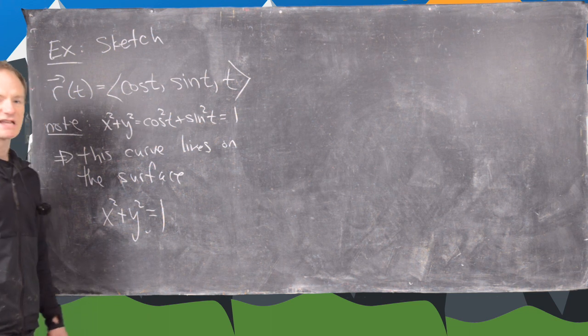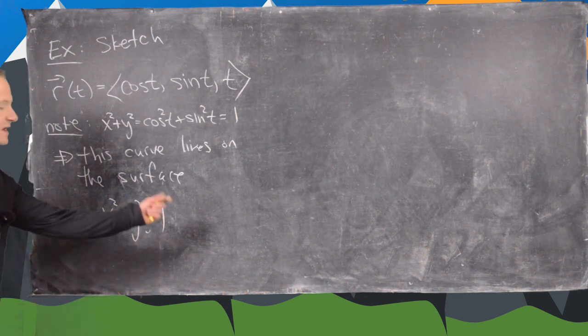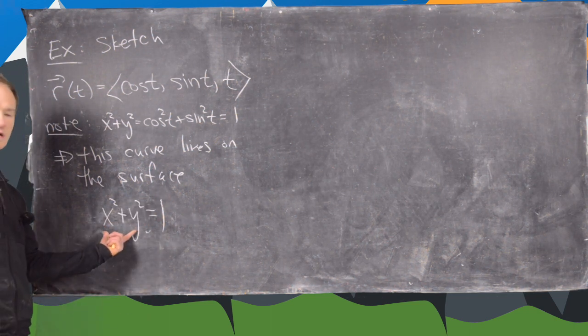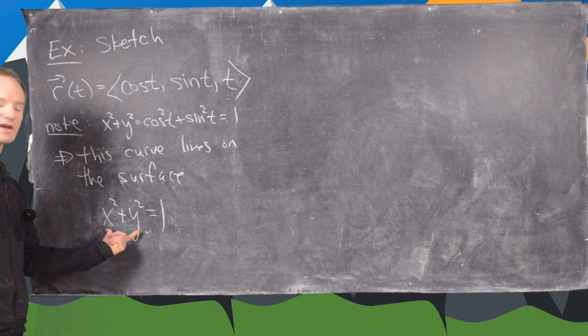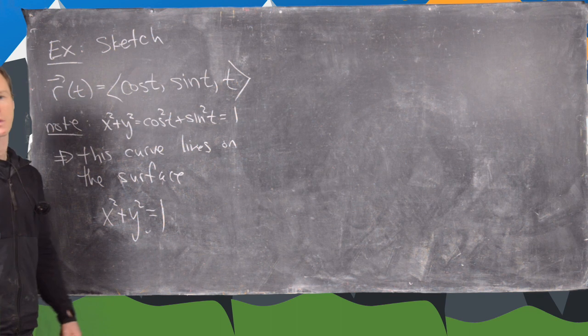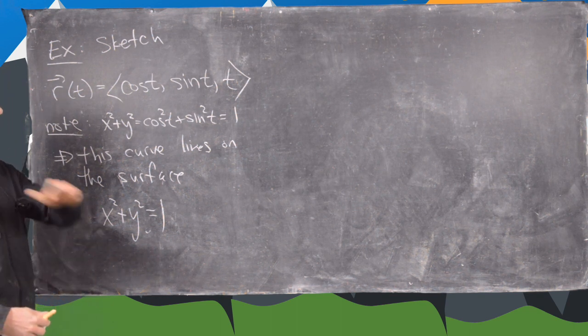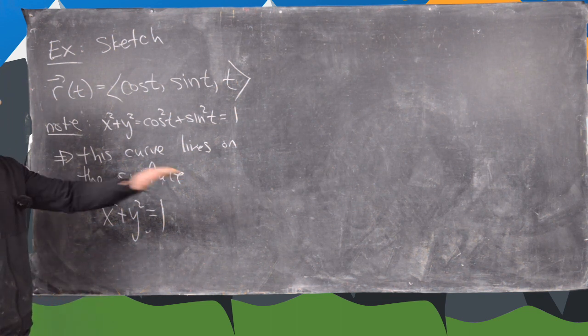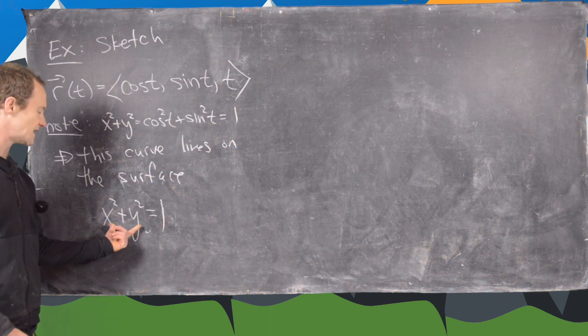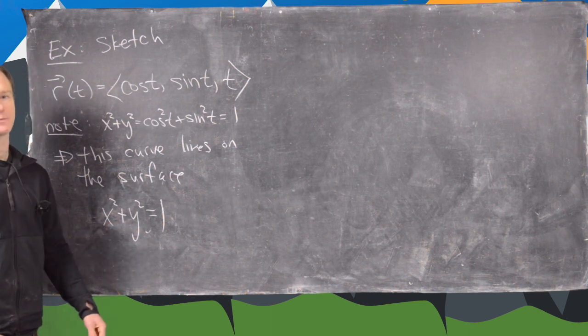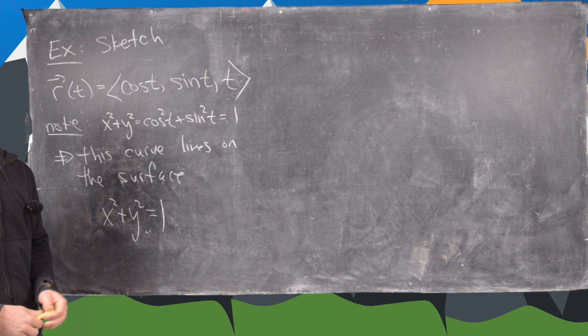So now let's think about what this surface is. So notice there's no z-coordinate in here. So that means for every z-value, you have the curve x squared plus y squared equals 1. In other words, if you cut this surface at any value of z, you have x squared plus y squared equals 1. In other words, you have a circle.